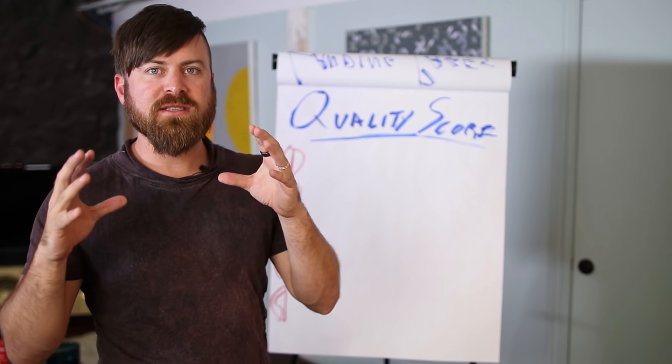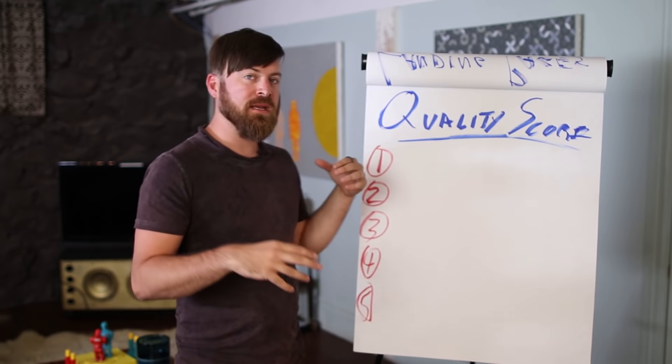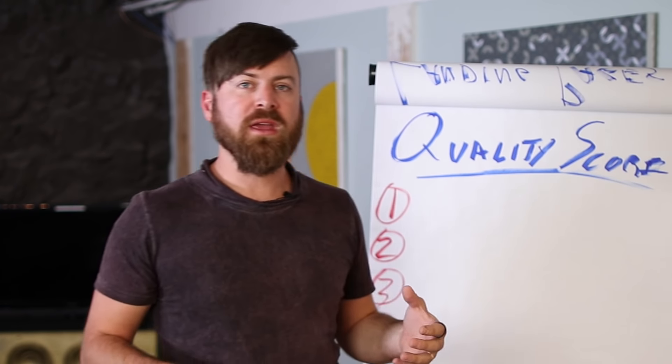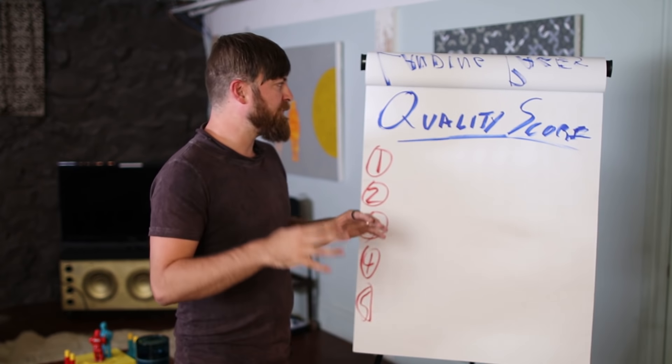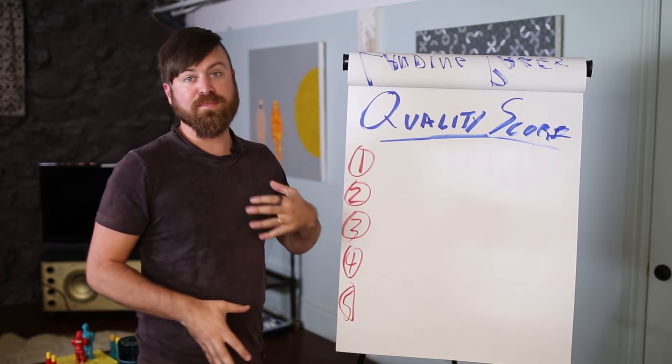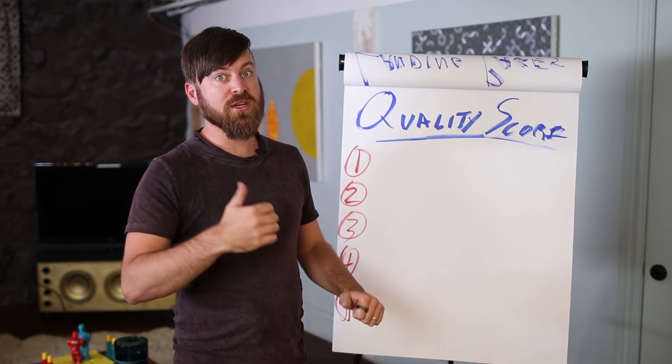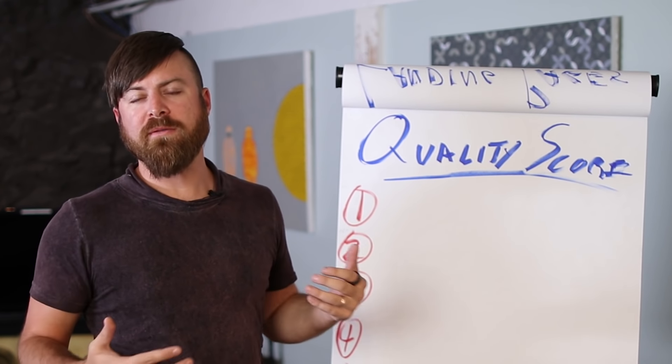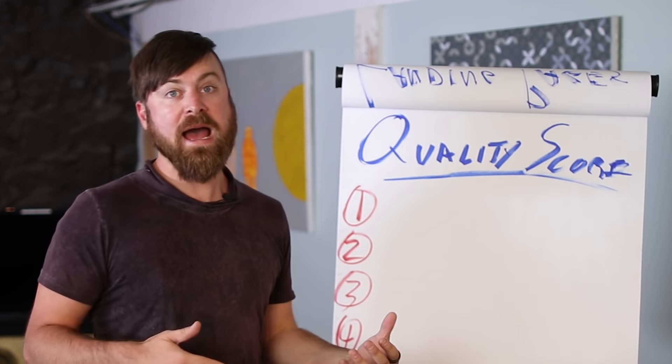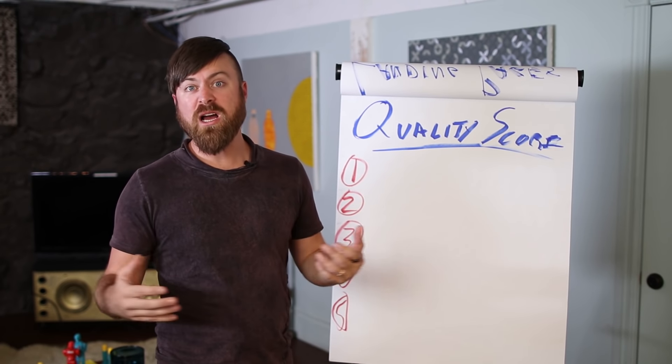I spend $300,000 to $400,000 per month on Google PPC ads, and quality score is really important if you want lower cost per click and more ad placements. I'll be showing you the 5 big tips to increasing your quality score, lowering your costs, and increasing your reach that I've learned in my business.